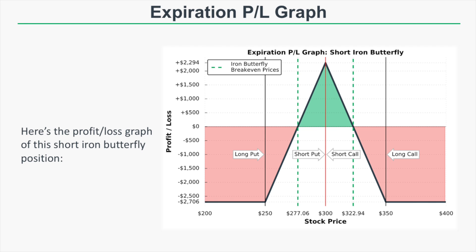We have a nice wide range of profitability. Our maximum loss potential is $2,706, occurring if the stock price is below $250 or above $350 at expiration. That maximum loss comes from the $50-wide put spreads and $50-wide call spreads minus the $22.94 credit collected. Since both spread widths are equal, we have the same risk on the upside and downside: $50 minus $22.94 times 100 equals $2,706.